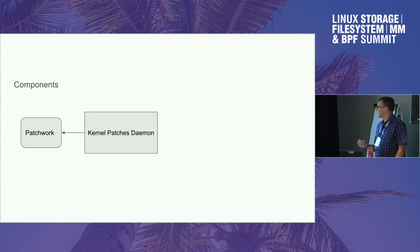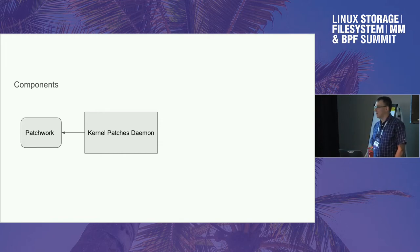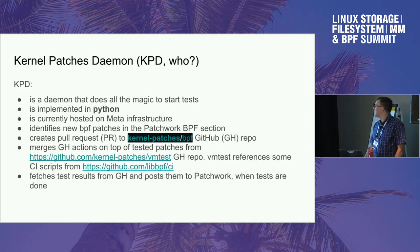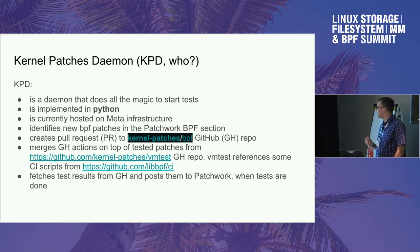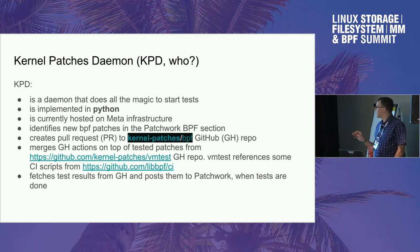The black box that actually takes a patch from Patchwork and does all the magic is the kernel patches daemon. It's a service implemented in Python, currently hosted on Meta infrastructure. It tracks and identifies new BPF patches in the Patchwork BPF section, creates pull requests to GitHub to kernel-patches-bpf wrapper, and merges GitHub Actions on top of it. Once tests complete, it fetches the results and posts them to Patchwork.